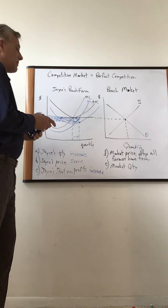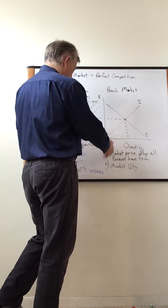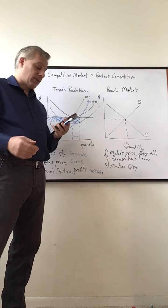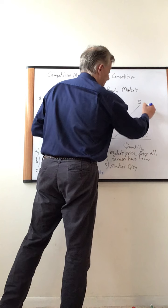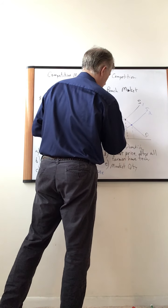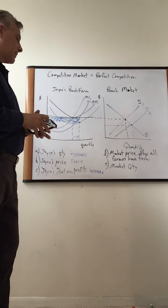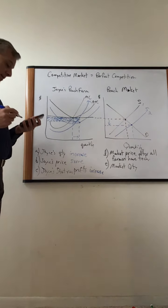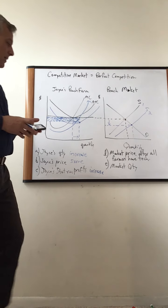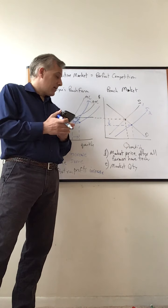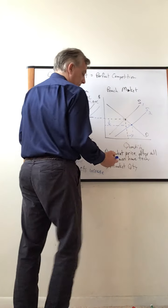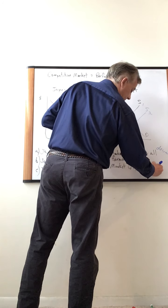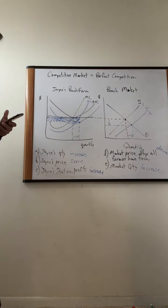Part D is about the market. What's going to happen to the market price or industry price of peaches after they all adopt new technology? New technology is going to increase the supply. The market price after technology is implemented is going to go down. And what's going to happen to the quantity of peaches produced — still under the market or industry category? The quantity of peaches produced has increased. Price decreases and quantity increases — the classic result of an increase in supply.